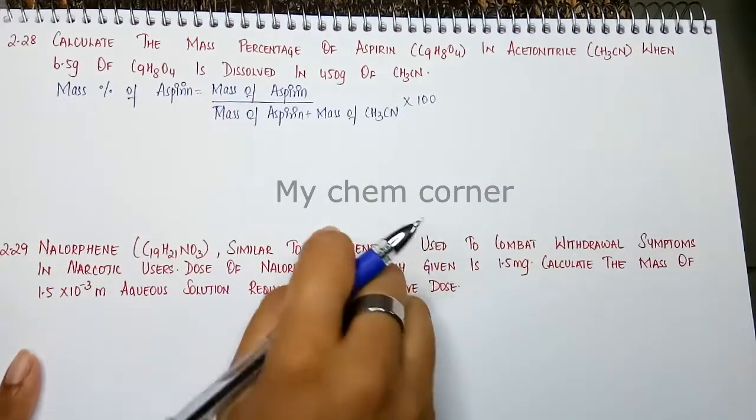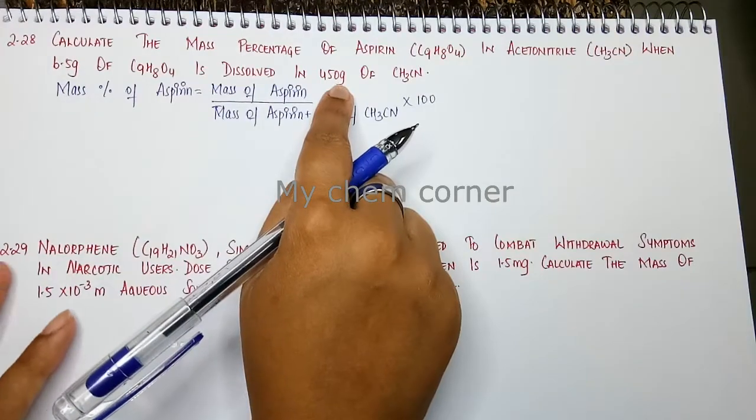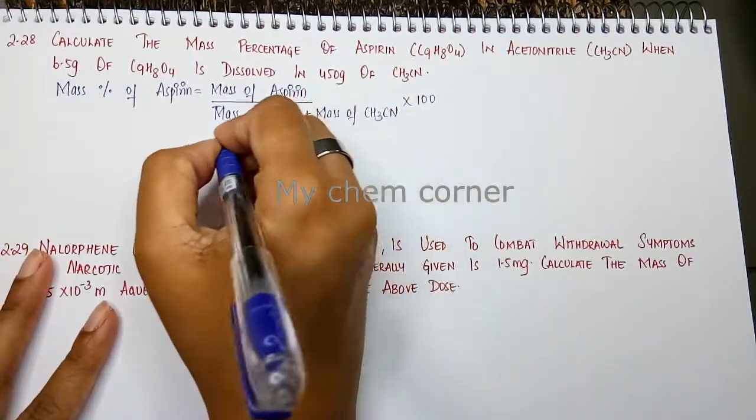Alright. Now mass of aspirin is given 6.5, mass of acetonitrile is given 450. Direct substitution here.